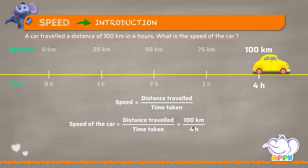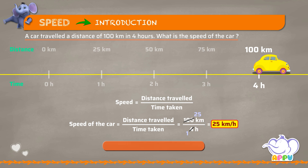So speed of the car equals distance traveled by time taken, which equals 100 kilometers divided by 4 hours. Four divides into four once, and four divides into one hundred twenty-five times — this equals 25 kilometers per hour. So the speed of the car is 25 kilometers per hour.